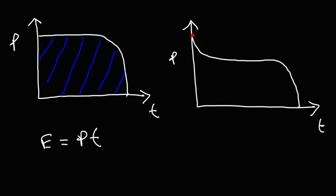If this is the maximum voltage, we can calculate the maximum power (power is voltage times current). If we know the nominal voltage, we can draw a rectangle that approximates the area under the curve. We have a portion of the area outside the rectangle that's compensated by the part of the rectangle above the curve — those two areas cancel out. So we can use the power-time formula to approximate the total area under the curve.